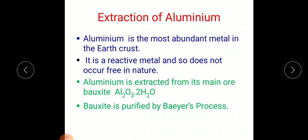Aluminium, as you know, is the most abundant metal in the Earth's crust. It is a reactive metal and so does not occur free in nature.